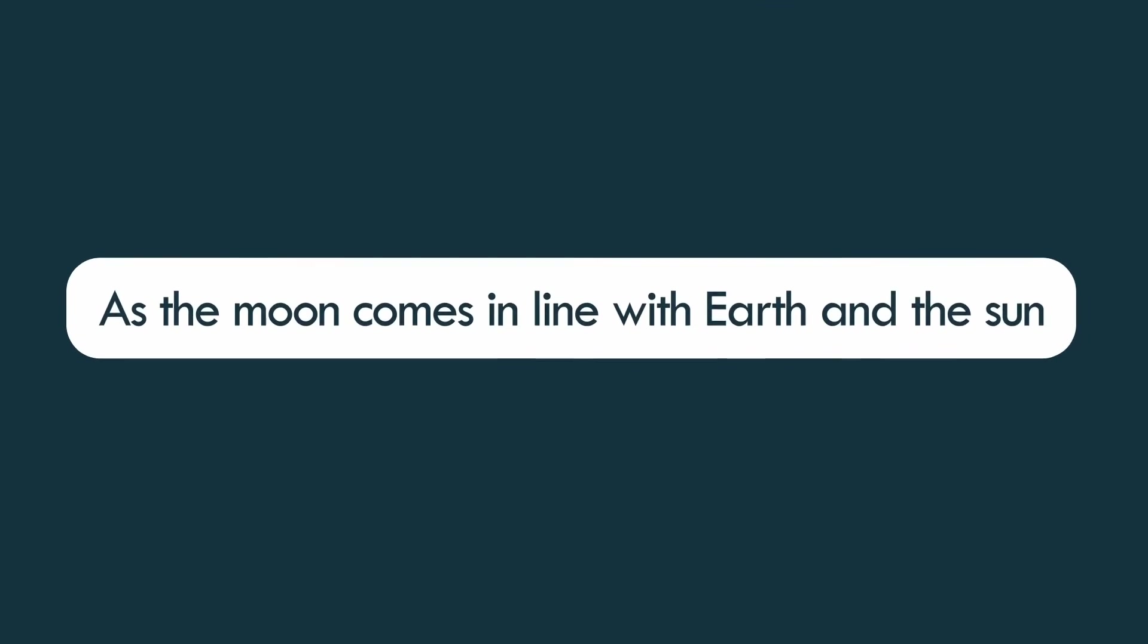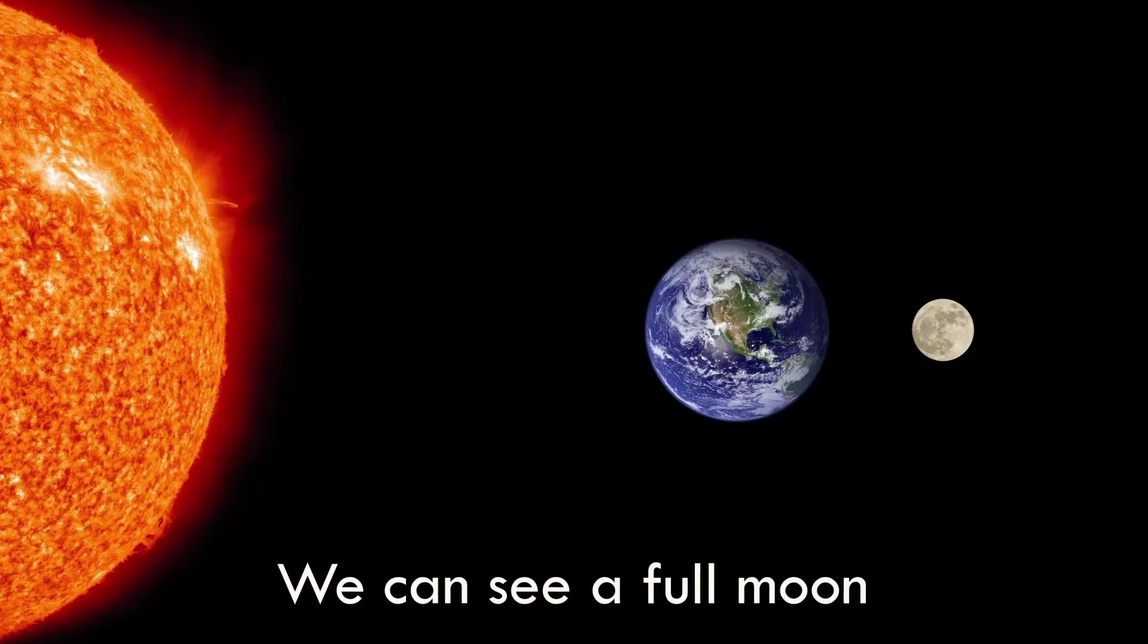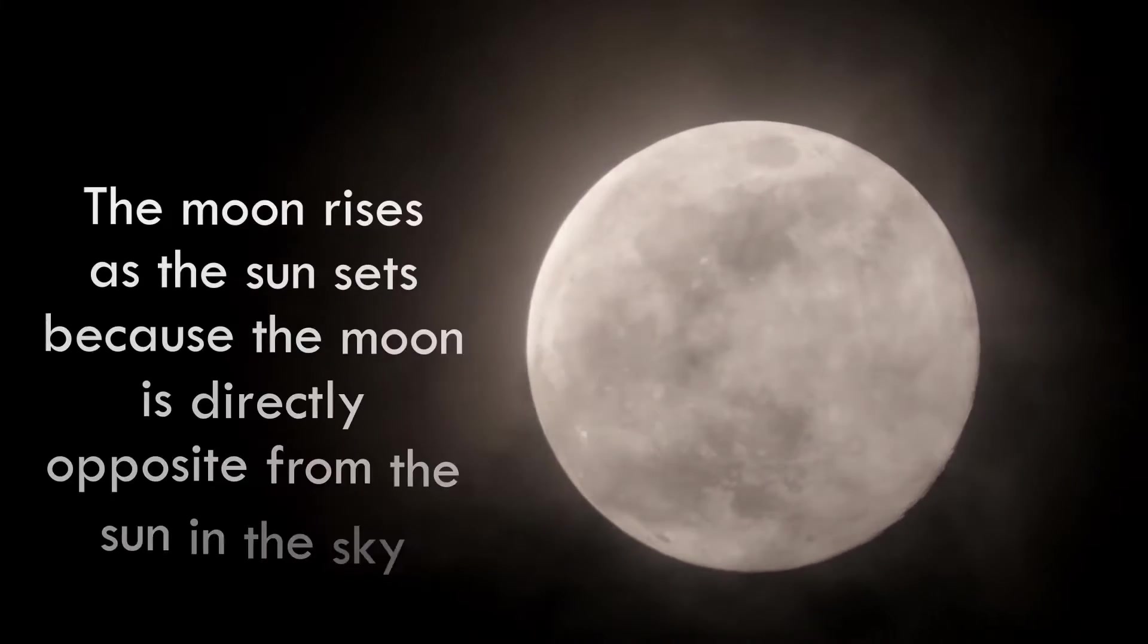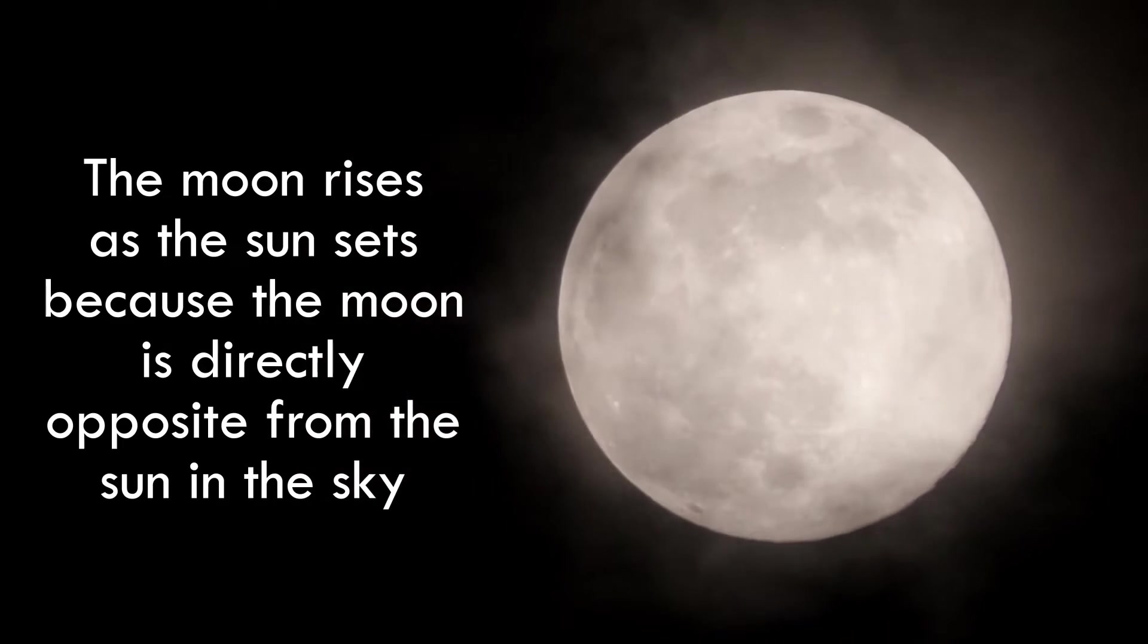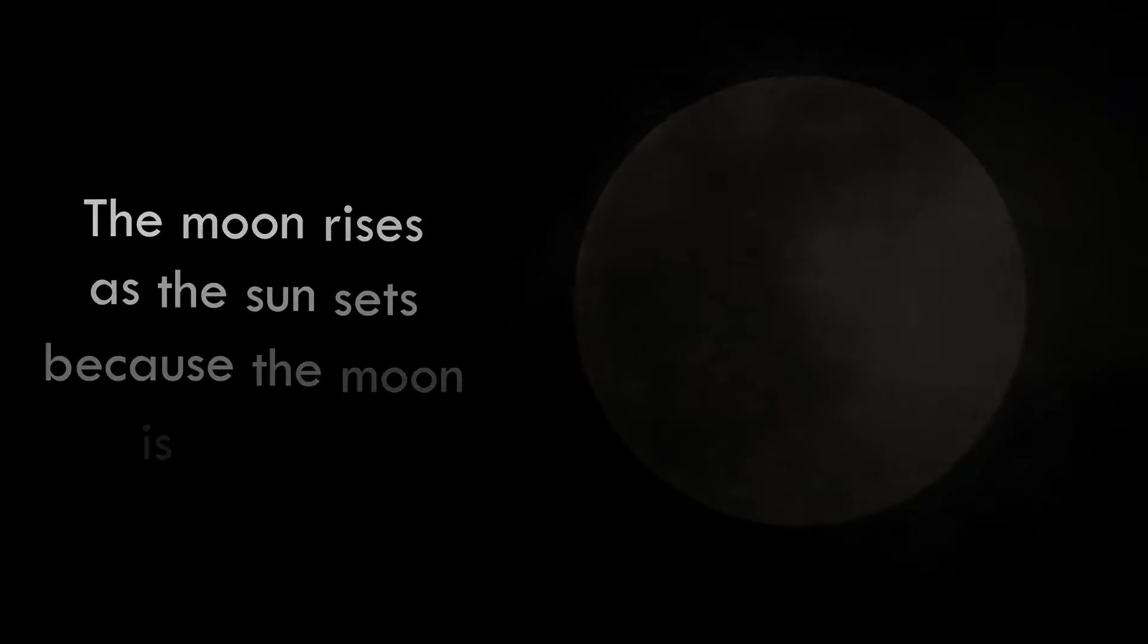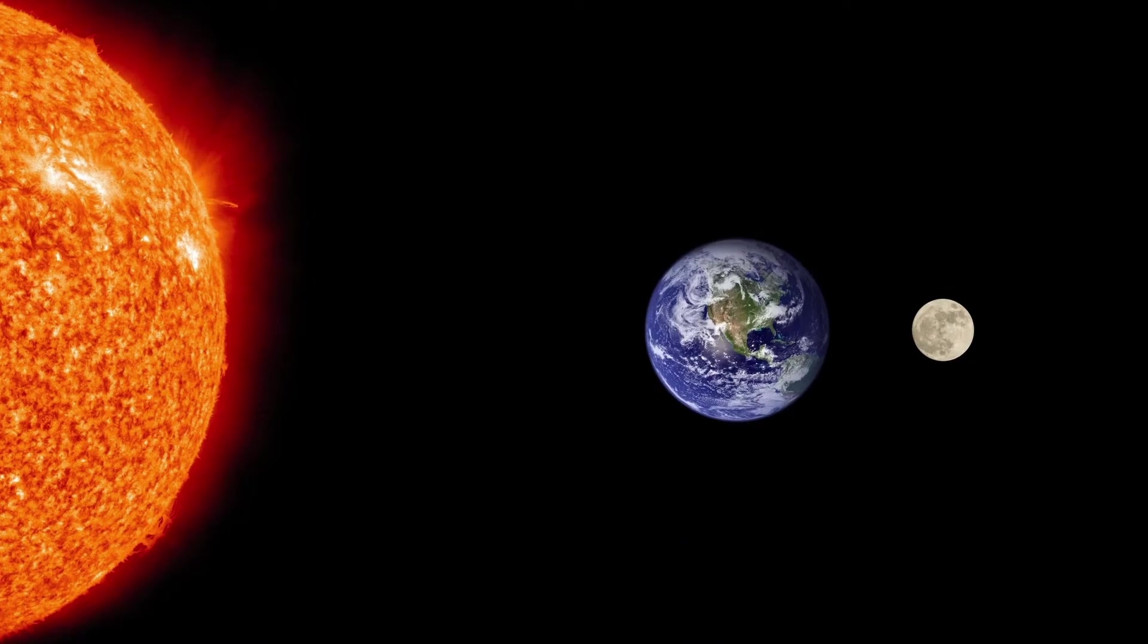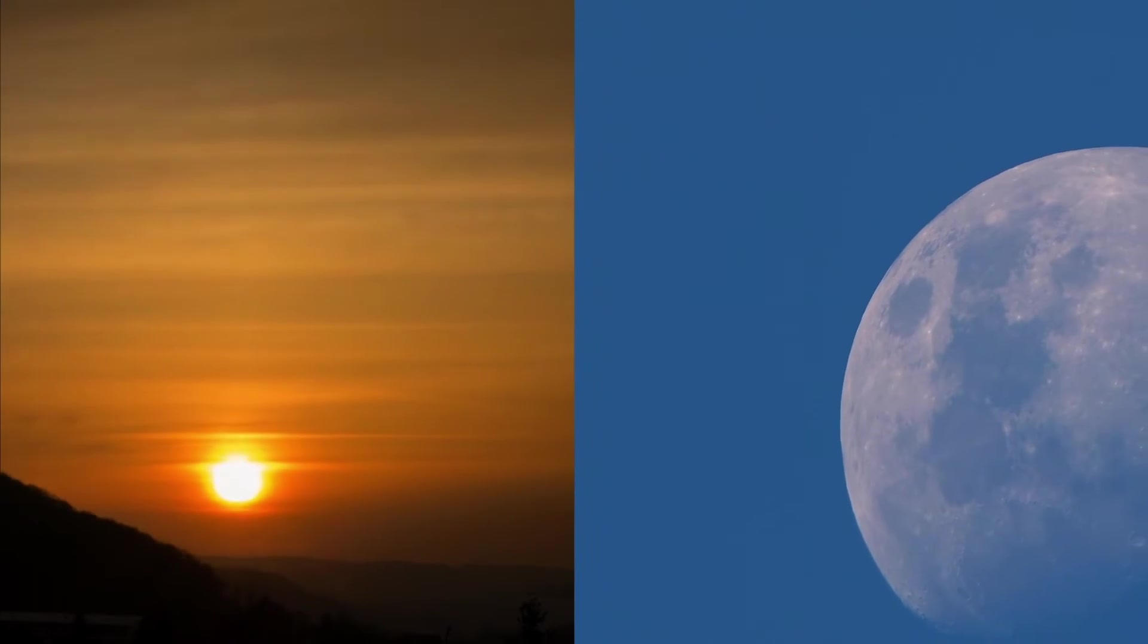As the Moon comes in line with Earth and the Sun, with Earth in between the Moon and the Sun, we can see a full Moon. Around the time of the full Moon, the Moon rises as the Sun sets because the Moon is directly opposite from the Sun in the sky. Therefore, during every full Moon, the Sun, Moon, and Earth line up in such a way that we can watch the Sun setting and the Moon rising at roughly the same time.